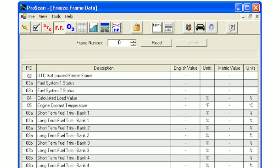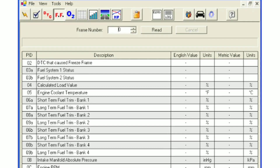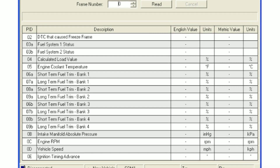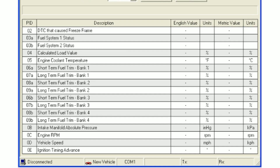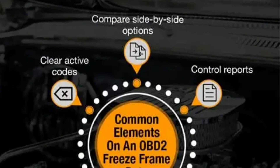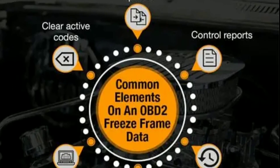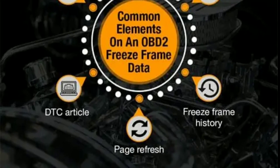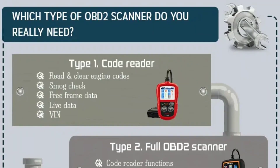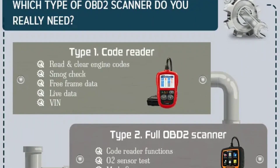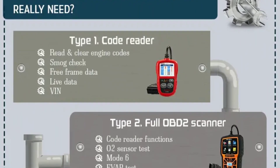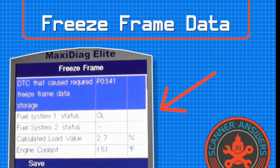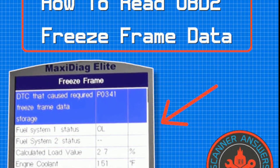Why clear freeze frame data? Now, you might wonder why you'd want to clear freeze frame data in the first place. Well, after you've fixed the underlying issue that triggered the trouble code, you'd want to ensure that the old data doesn't cause confusion later on. Clearing the freeze frame data is like starting with a clean slate, allowing your vehicle's diagnostic system to record fresh data if another issue arises. Let's dive into the steps of how to clear freeze frame data.